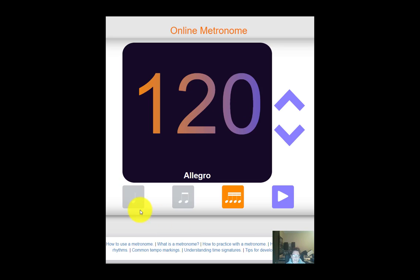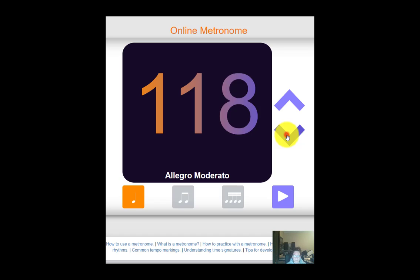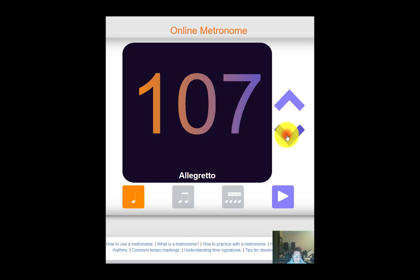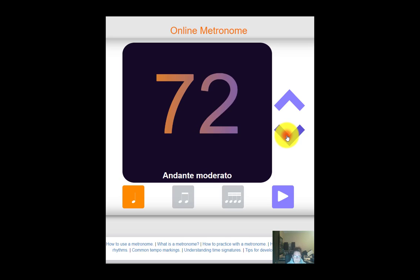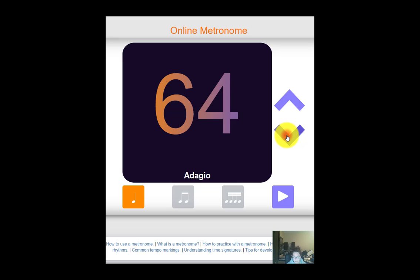So what I want to do is set this at quarter note equals 60. So I have to click all the way down. You can't use the numbers on your keyboard. I've already tried that. So click all the way down to 60. And then you can hit play. And then you get a metronome going.